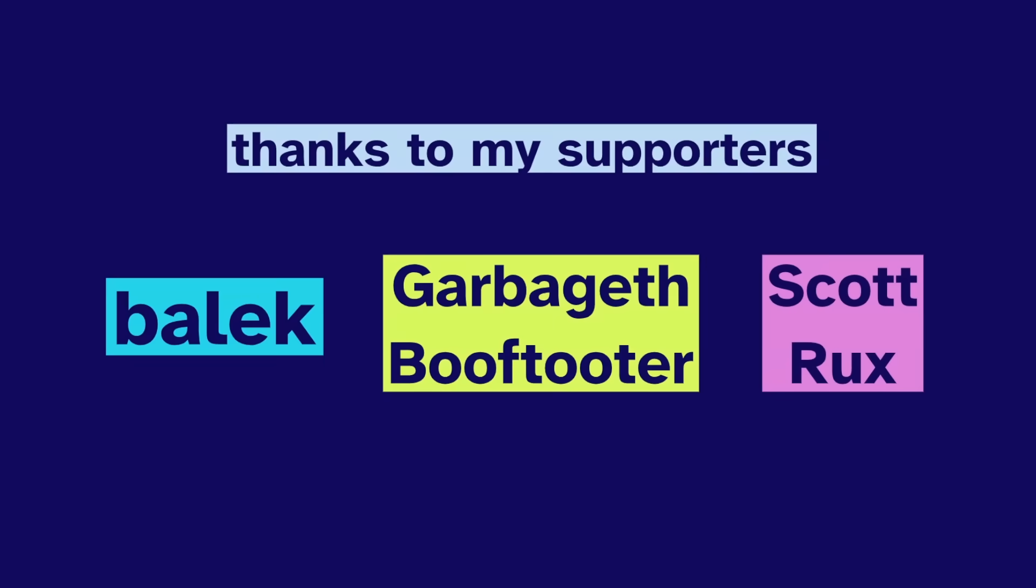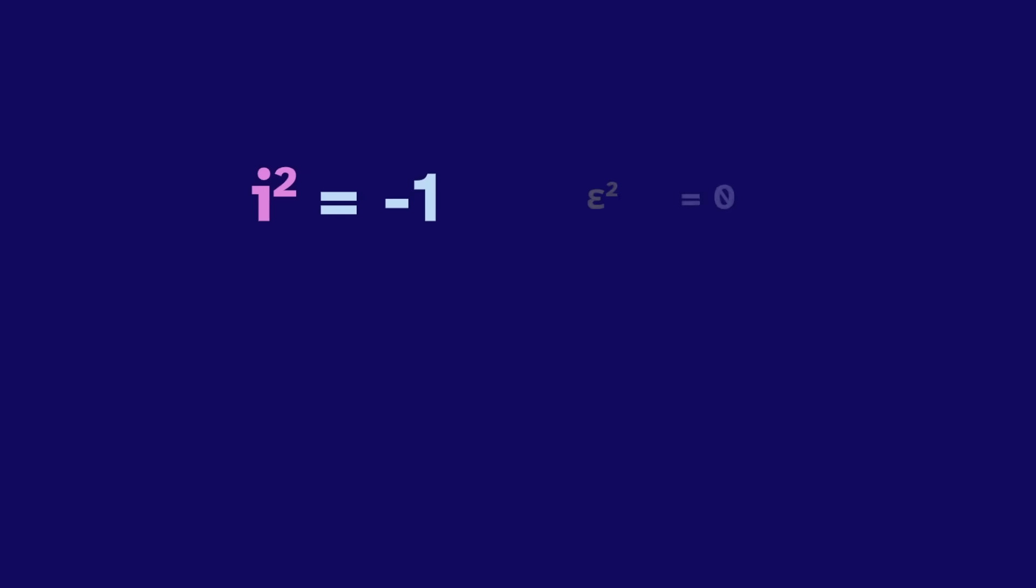Thanks to my supporters for helping to make this video possible. Join them to support my future videos. I squares to negative one, and epsilon squares to zero. But coming soon, we'll explore some other values that could be used. And we'll see what their shape arithmetic looks like. Until then, thanks for watching.